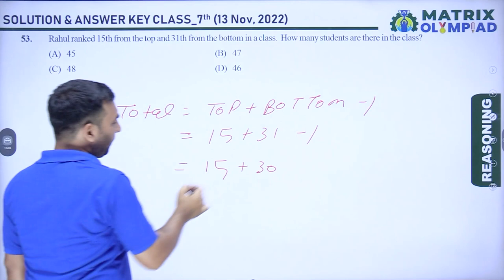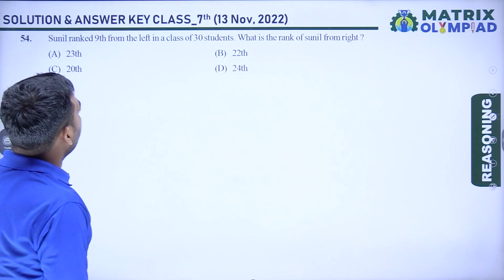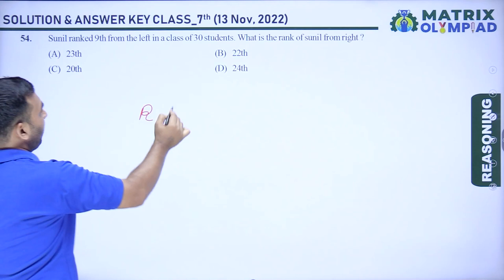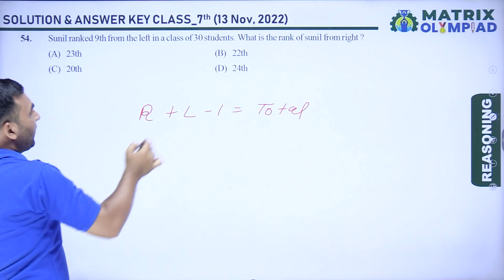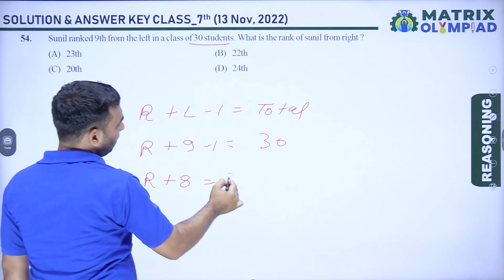Question 4: Sunil ranks 9th from the left in a class of 30 boys. Using the formula: right + left − 1 = total. Right = 30 − 9 + 1 = 22. Option B is correct.